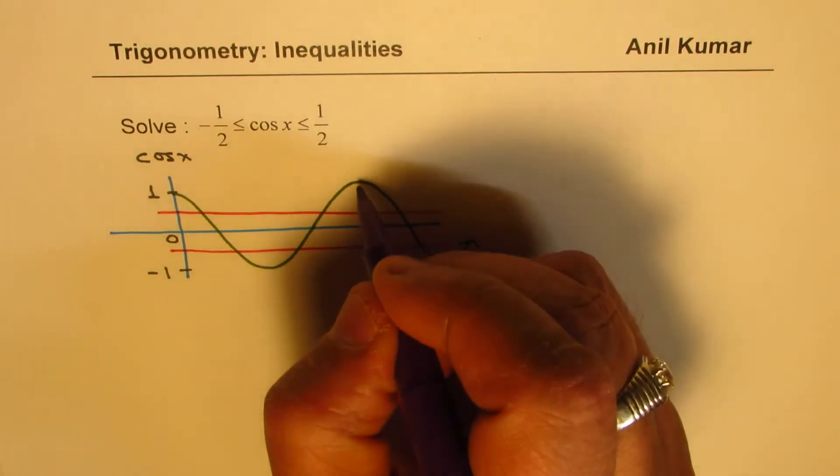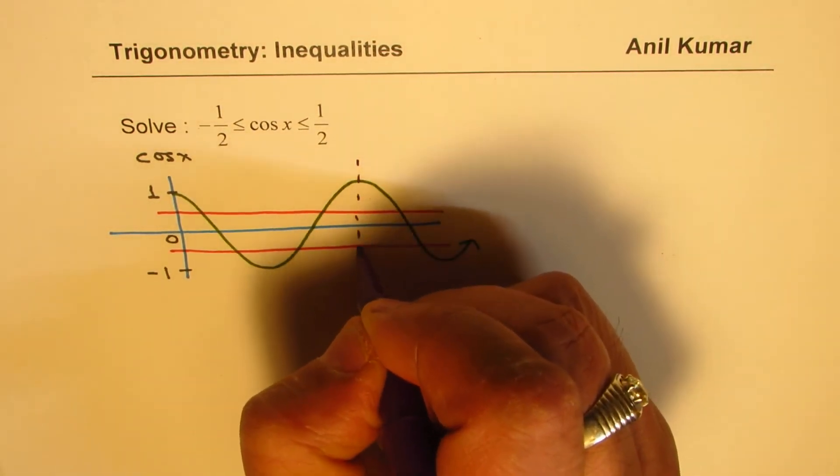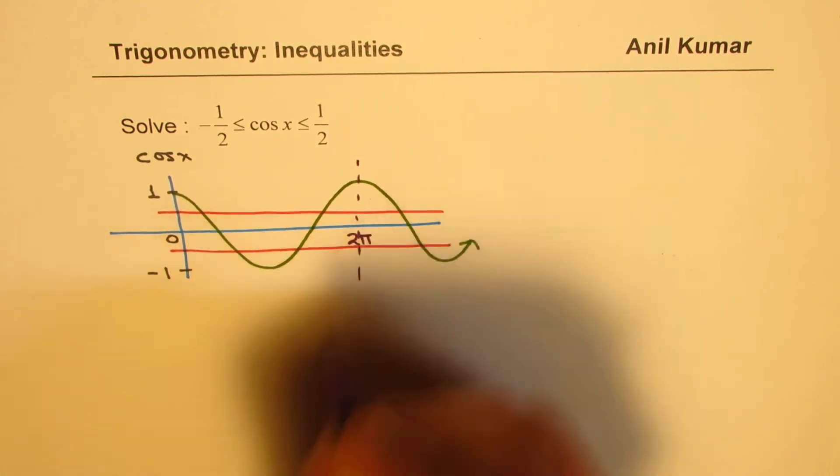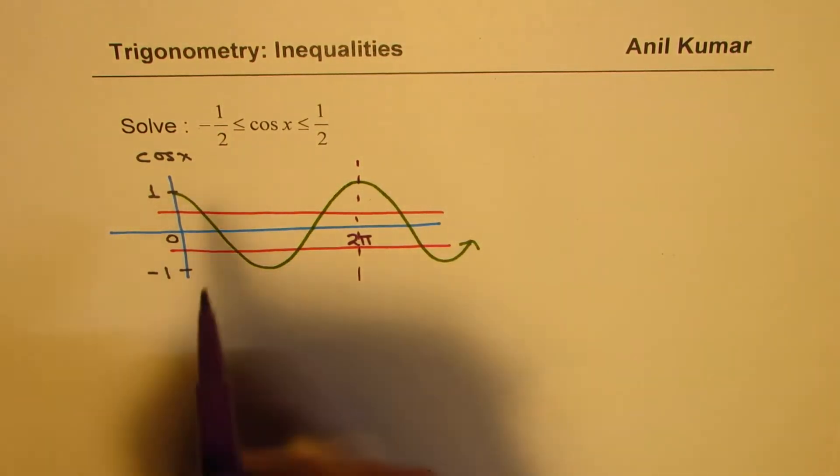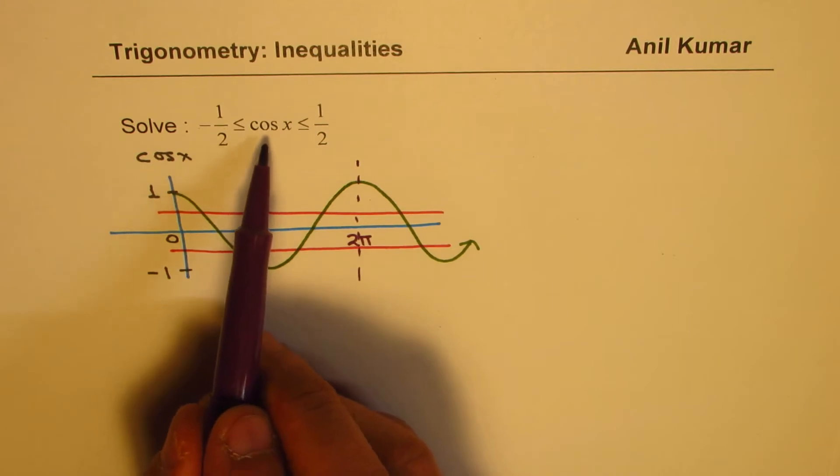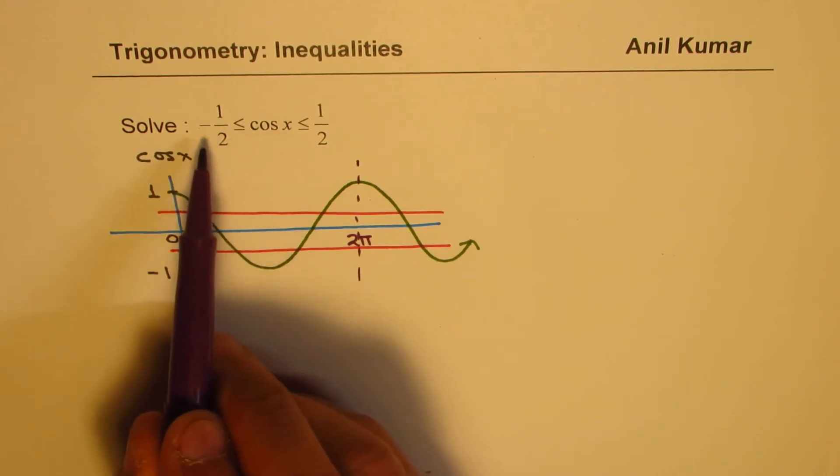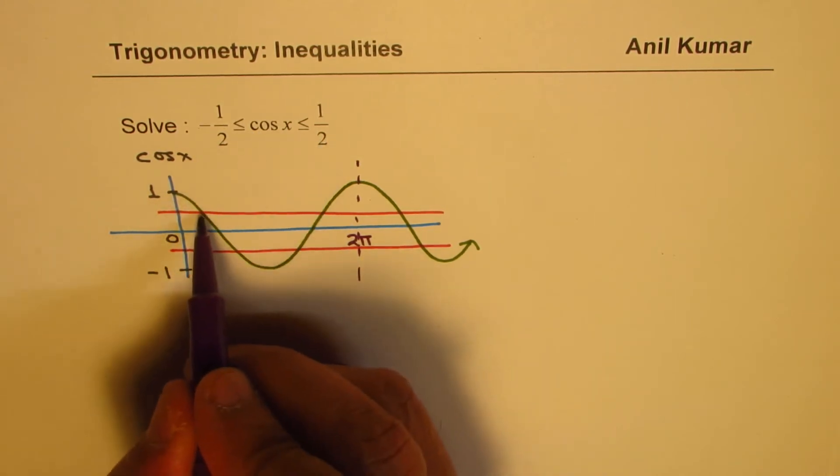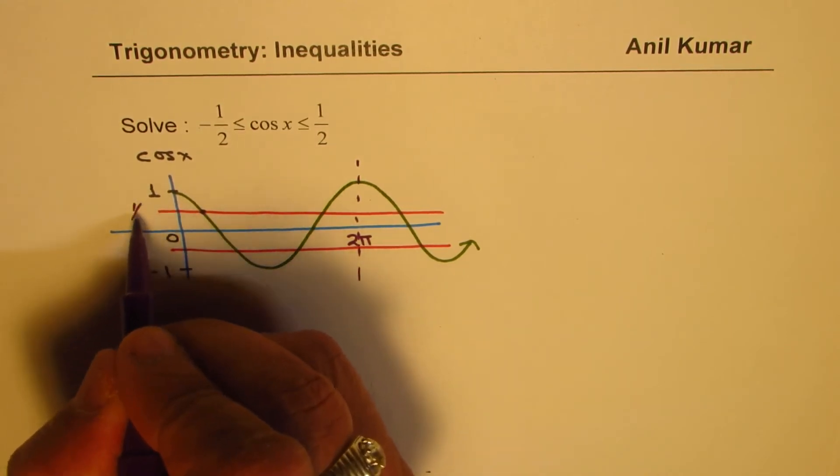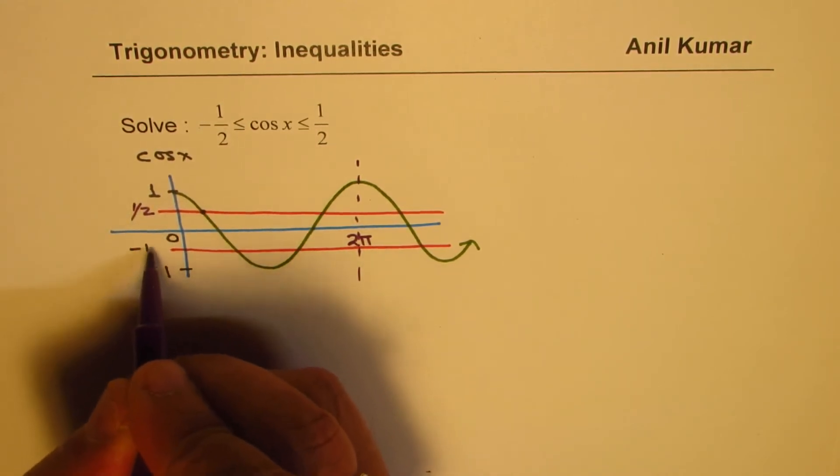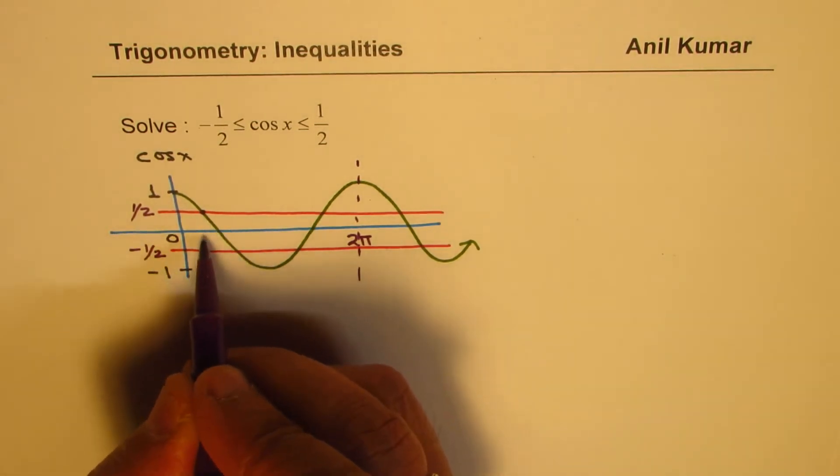One and a half wave you can see. That is one wave. So this is 2π. So the interval within which cos(x) is between minus and plus half is definitely this. So this is your value for half and that is your value for minus half. So we are looking for a solution which is between these two points.